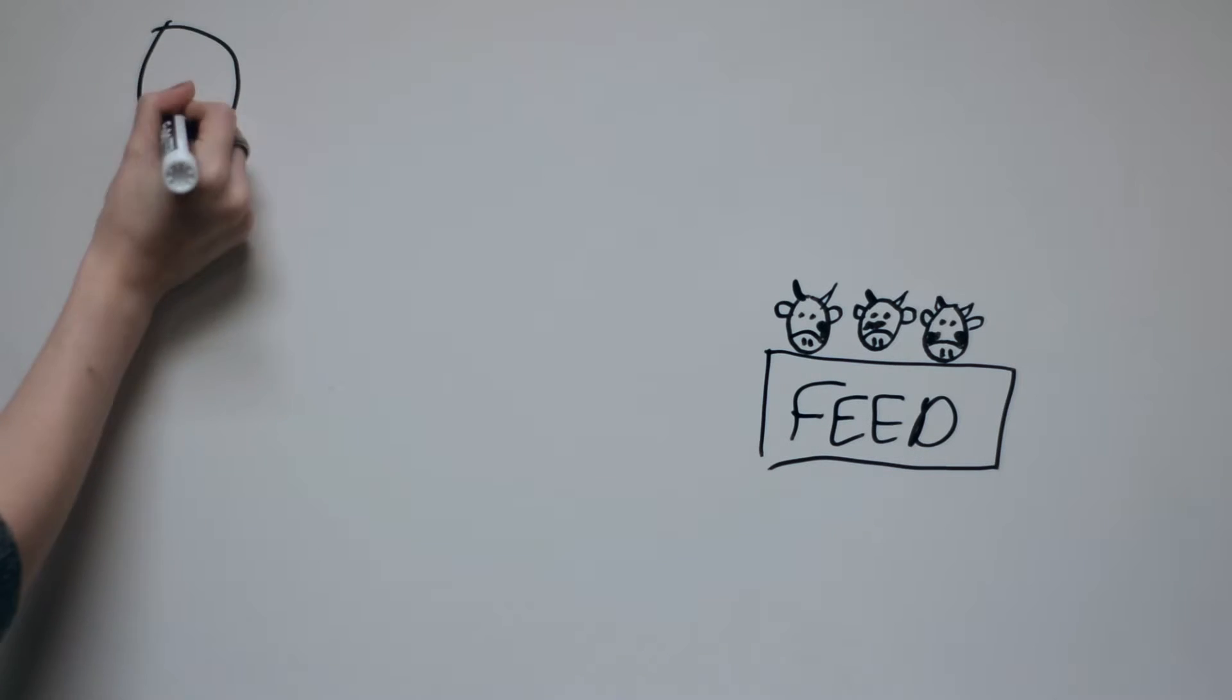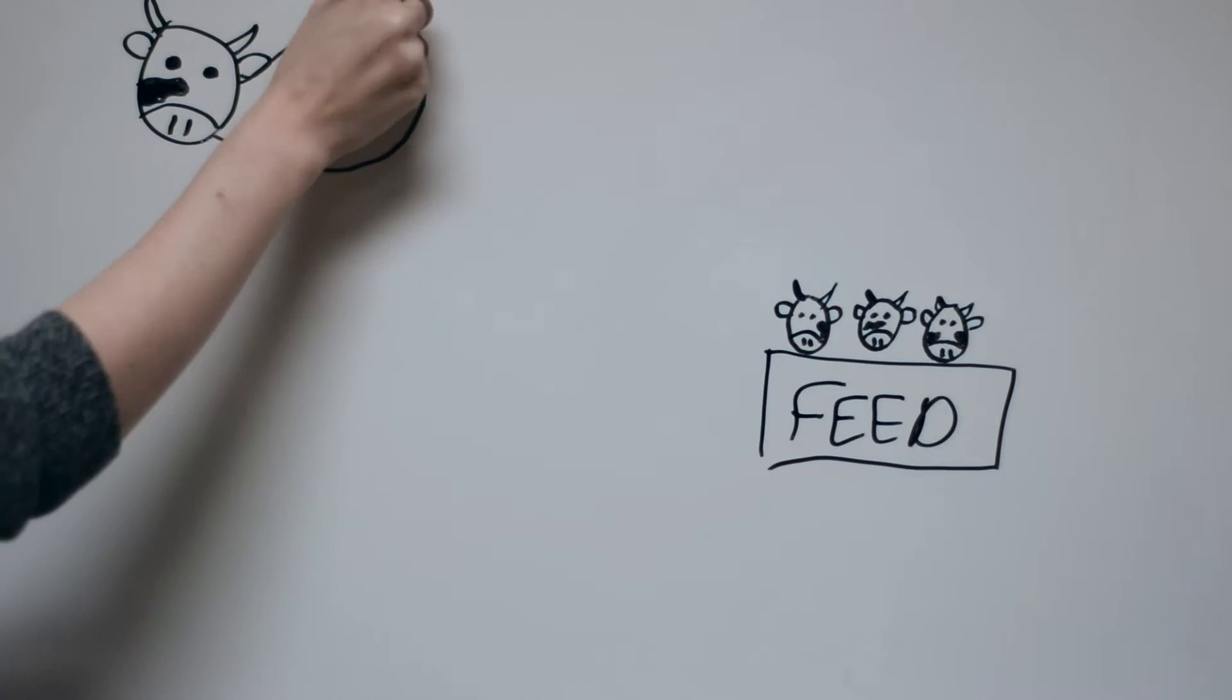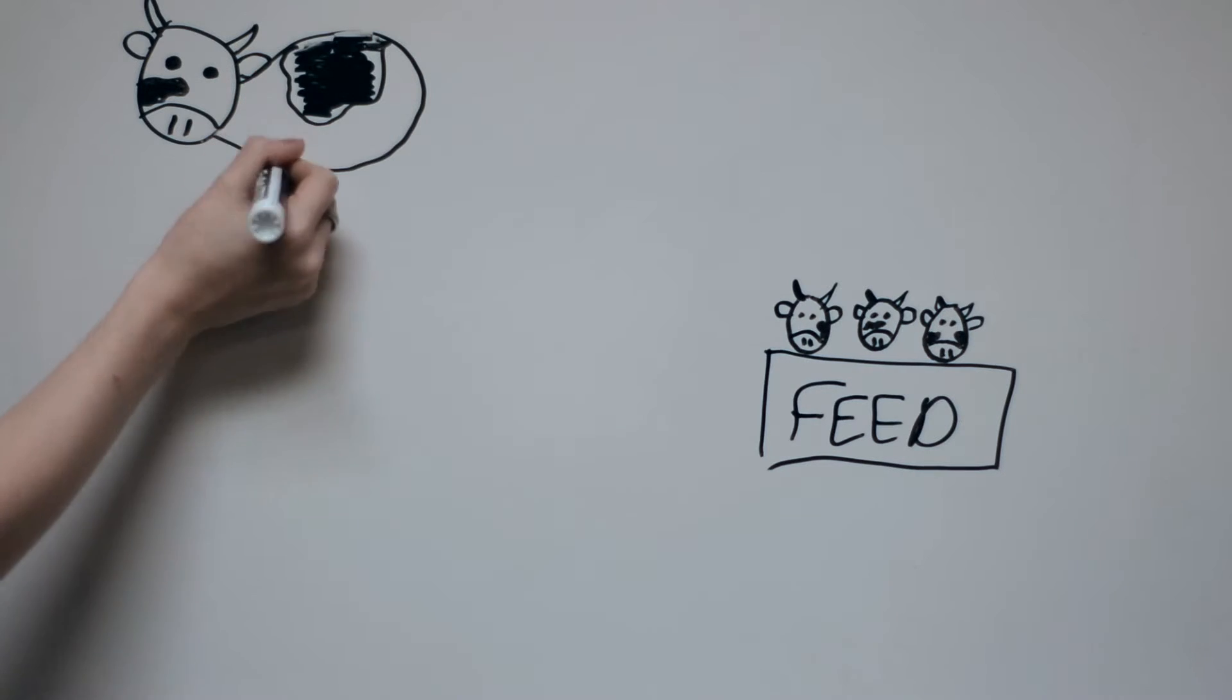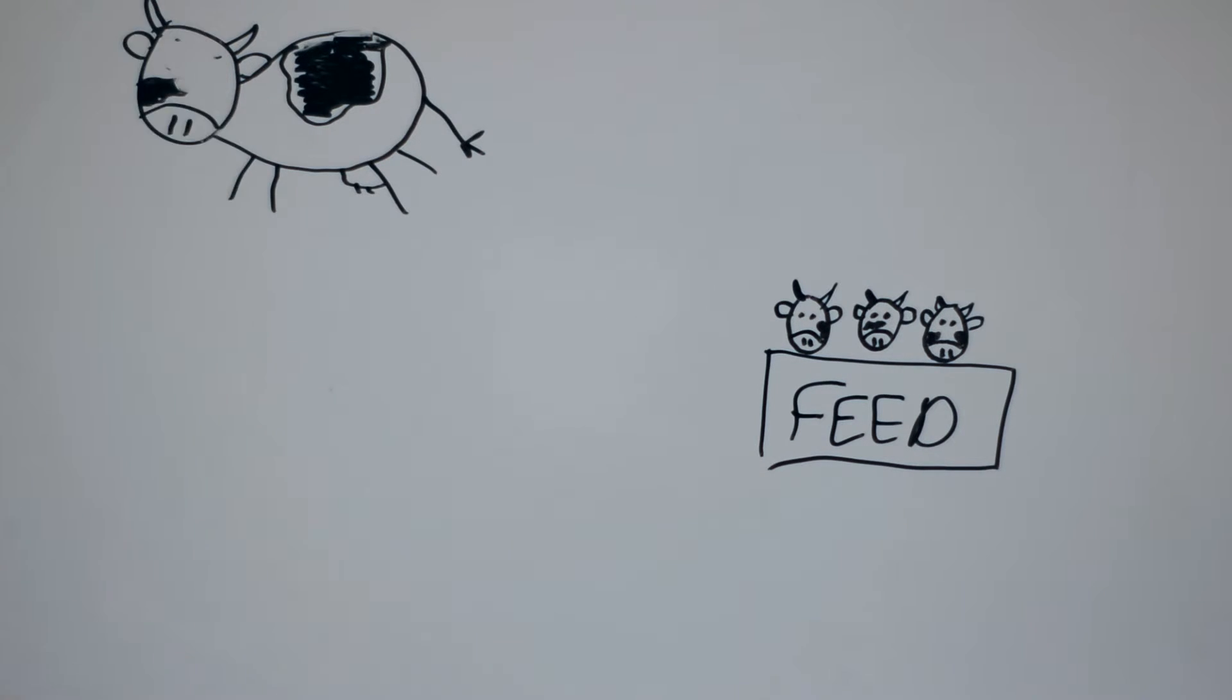These prions spread from one cow to another because the cow farmers use the animal's byproduct to feed other cows, and as they ingest the brain tissue, they too will contract the disease.